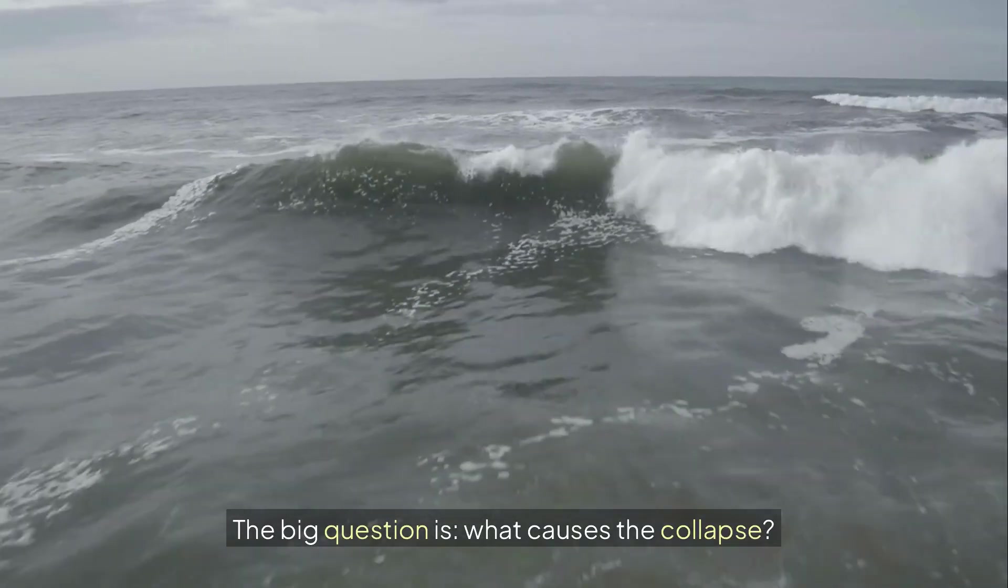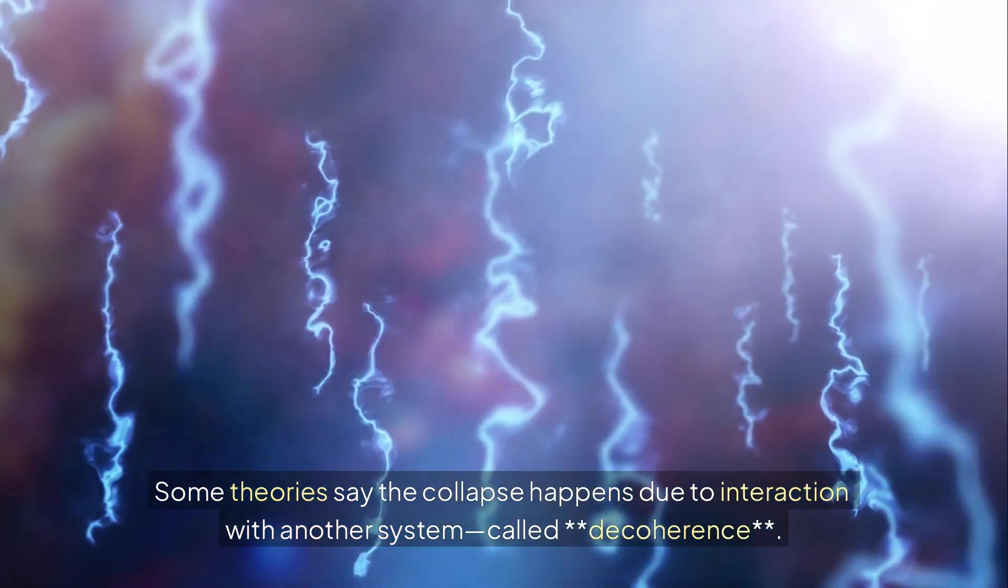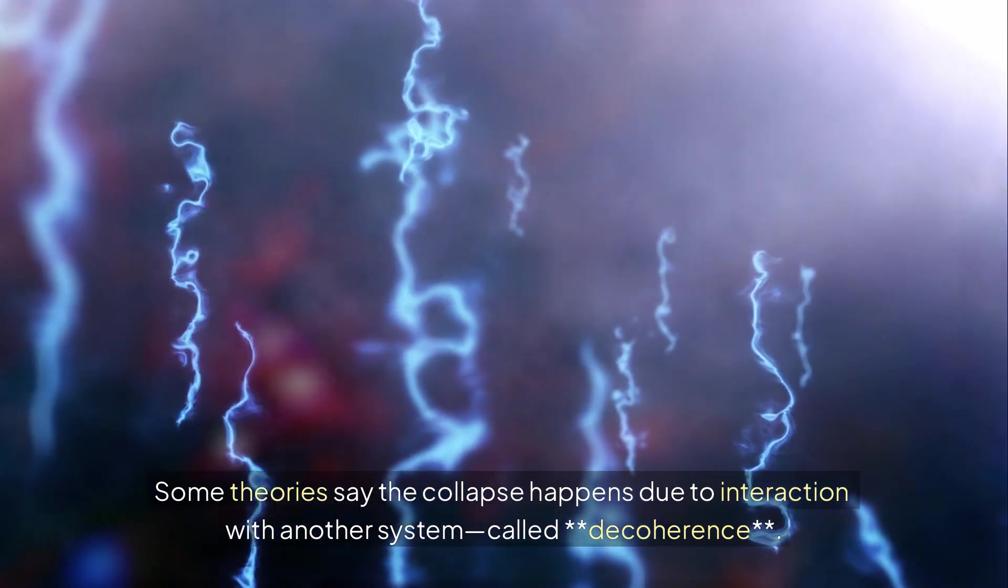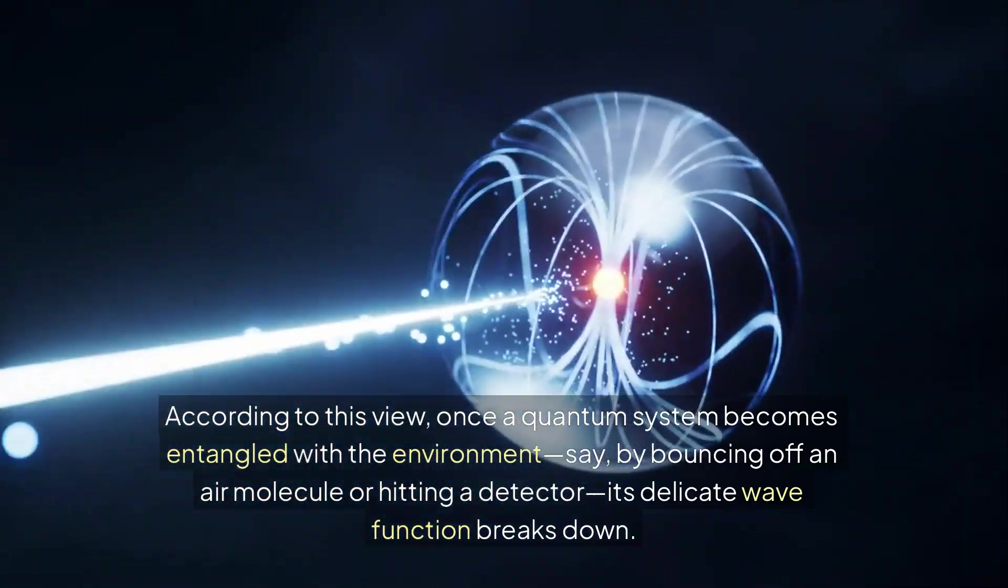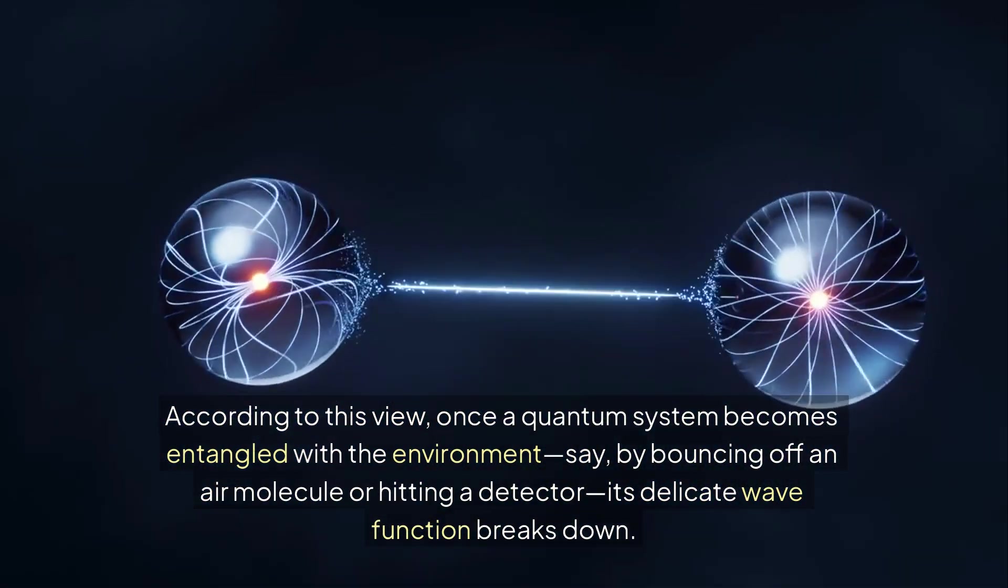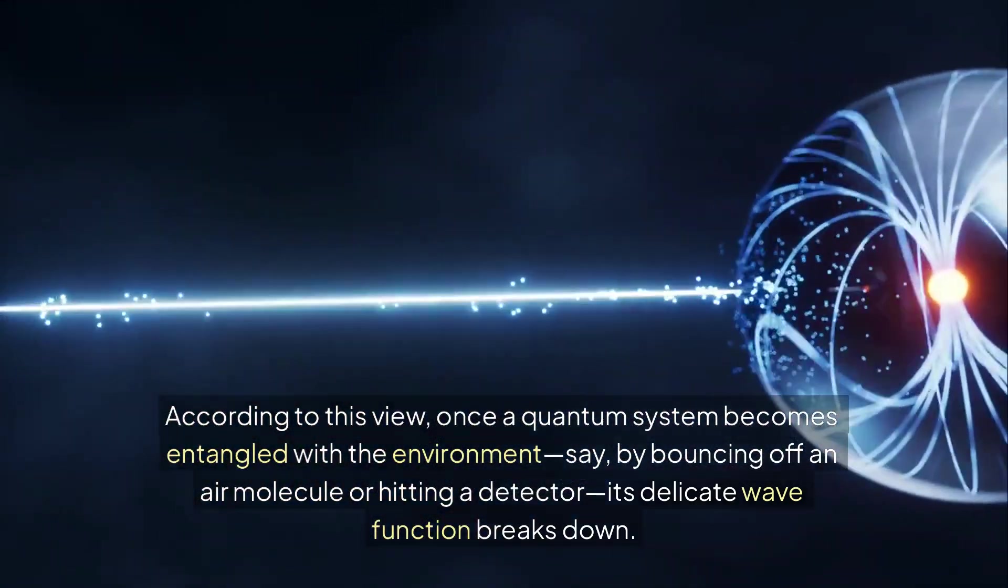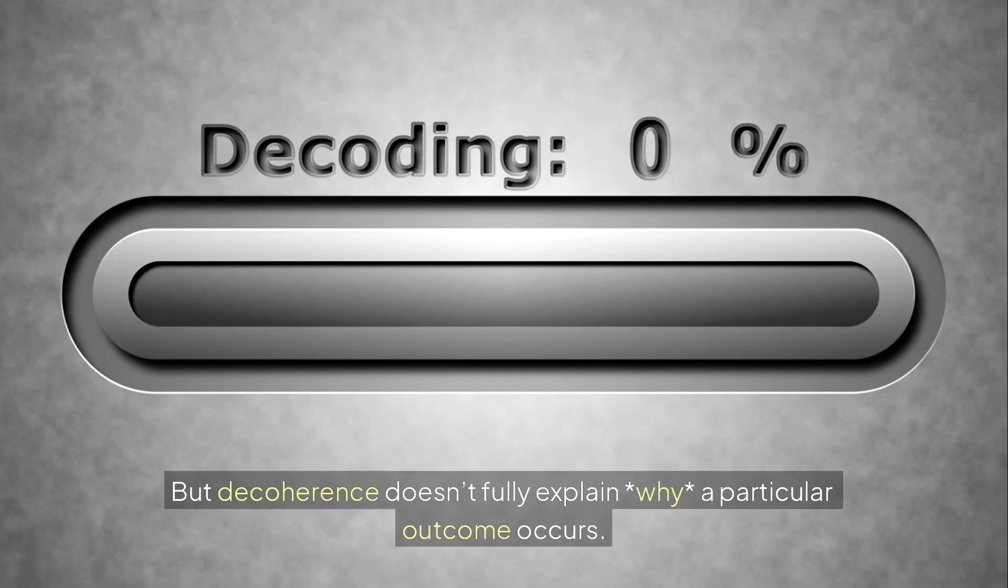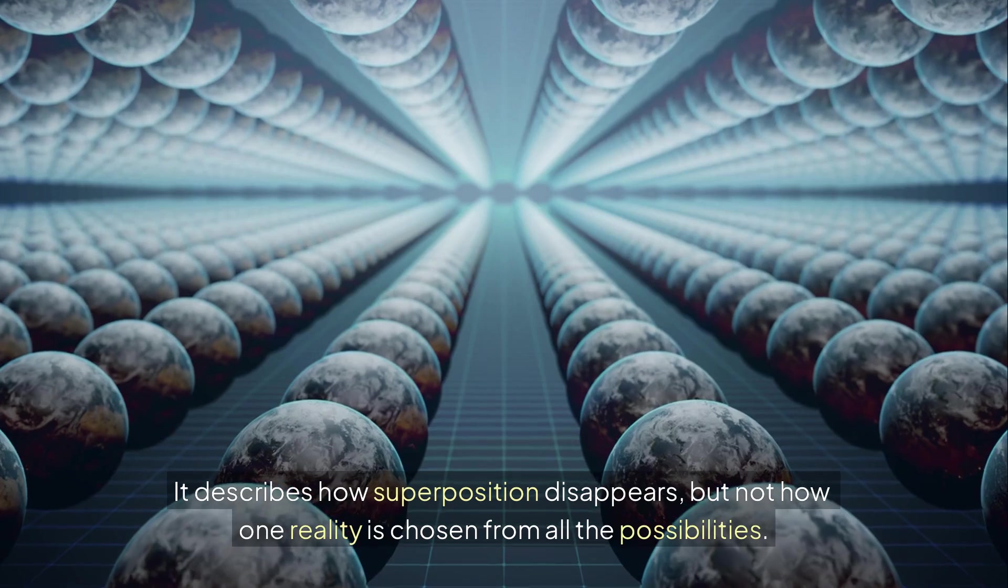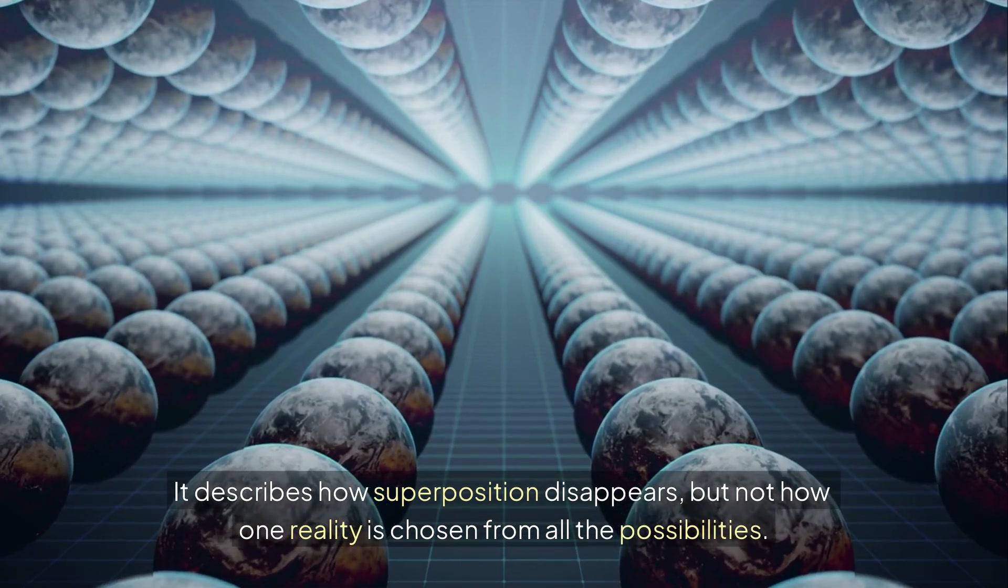The big question is, what causes the collapse? Some theories say the collapse happens due to interaction with another system, called decoherence. According to this view, once a quantum system becomes entangled with the environment, say, by bouncing off an air molecule or hitting a detector, its delicate wave-function breaks down. The superposition vanishes. You get a definite outcome. But decoherence doesn't fully explain why a particular outcome occurs. It describes how superposition disappears, but not how one reality is chosen from all the possibilities.